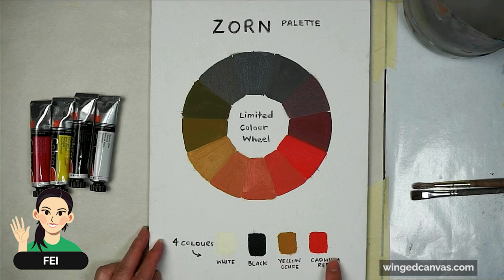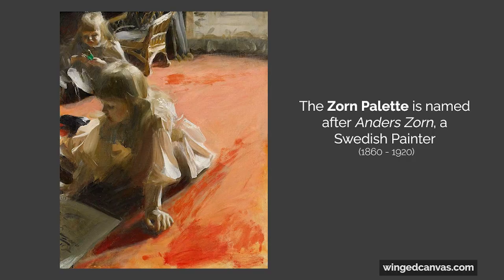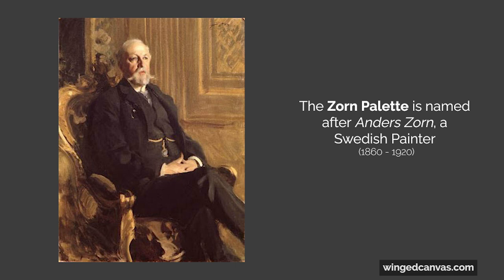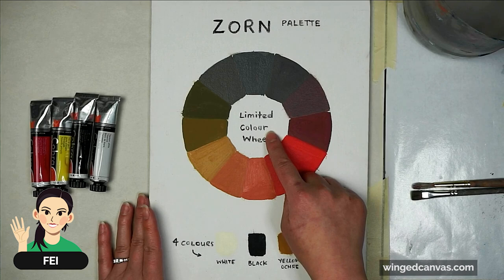You can see there is a color missing here, a primary color, and that's blue. The Zorn palette is a wonderful palette that you can use for skin tones and it's a very natural looking palette as well. This is called the limited color wheel.